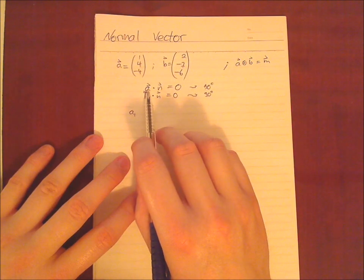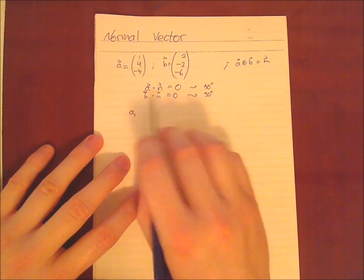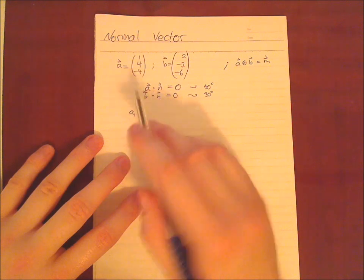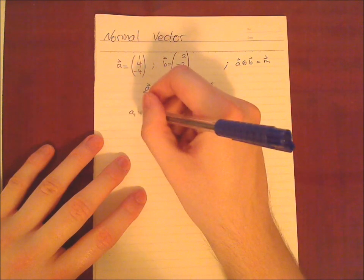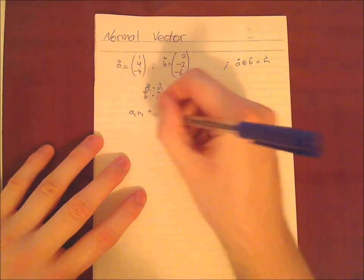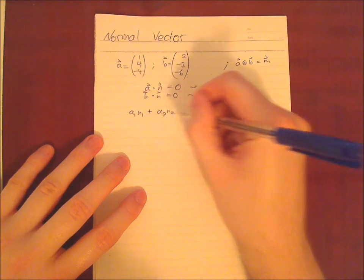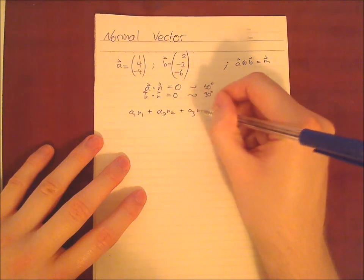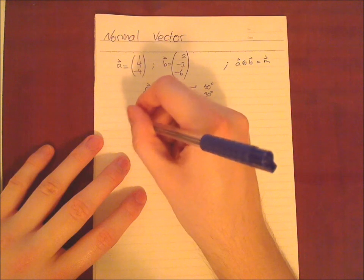By definition so if you multiply you receive zero so you do it component wise. So we have a1n1 plus a2n2 plus a3n3 equals zero. Same thing for b, b1n1 plus b2n2 plus b3n3 equals zero.